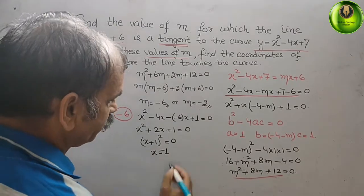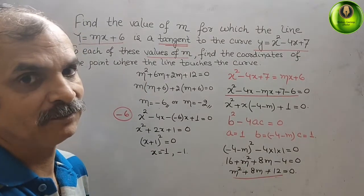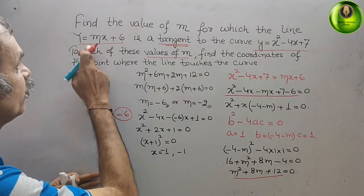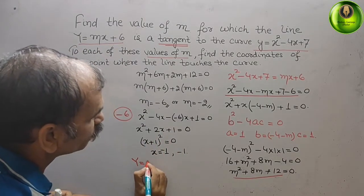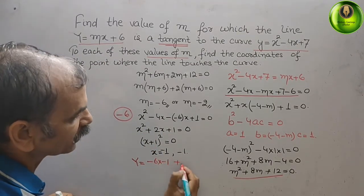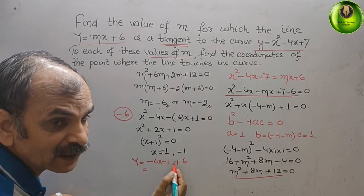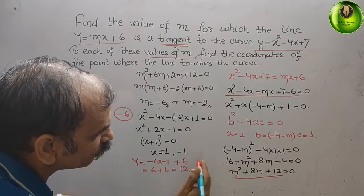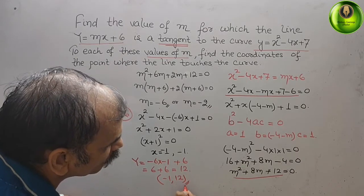With x = -1 and m = -6, we substitute into y = mx + 6: y = (-6)(-1) + 6 = 6 + 6 = 12. So the coordinate for m = -6 is (-1, 12).